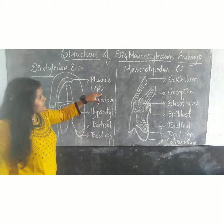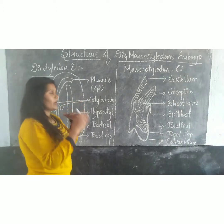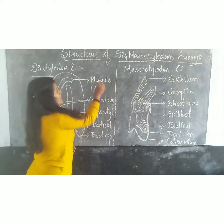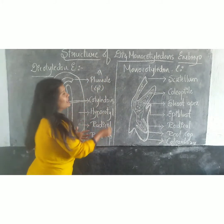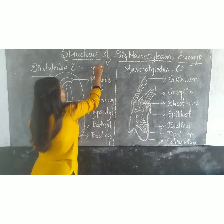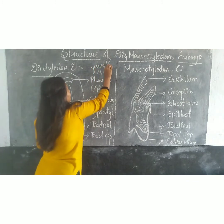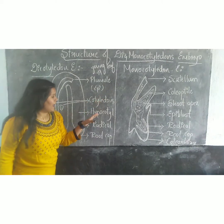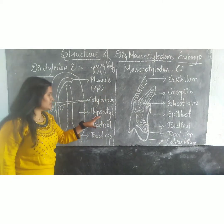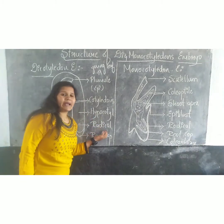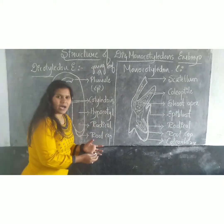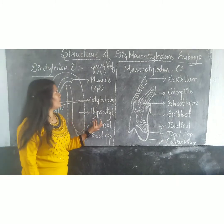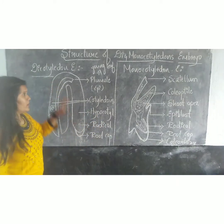This apicotel is the shoot apex — when it terminates, it results in the end leaf or true leaf. This apicotel completely terminates, and coming to the hypocautel, it terminates the radical or the root system where the roots are present. So this is the typical structure of the dipotelidonic embryo.